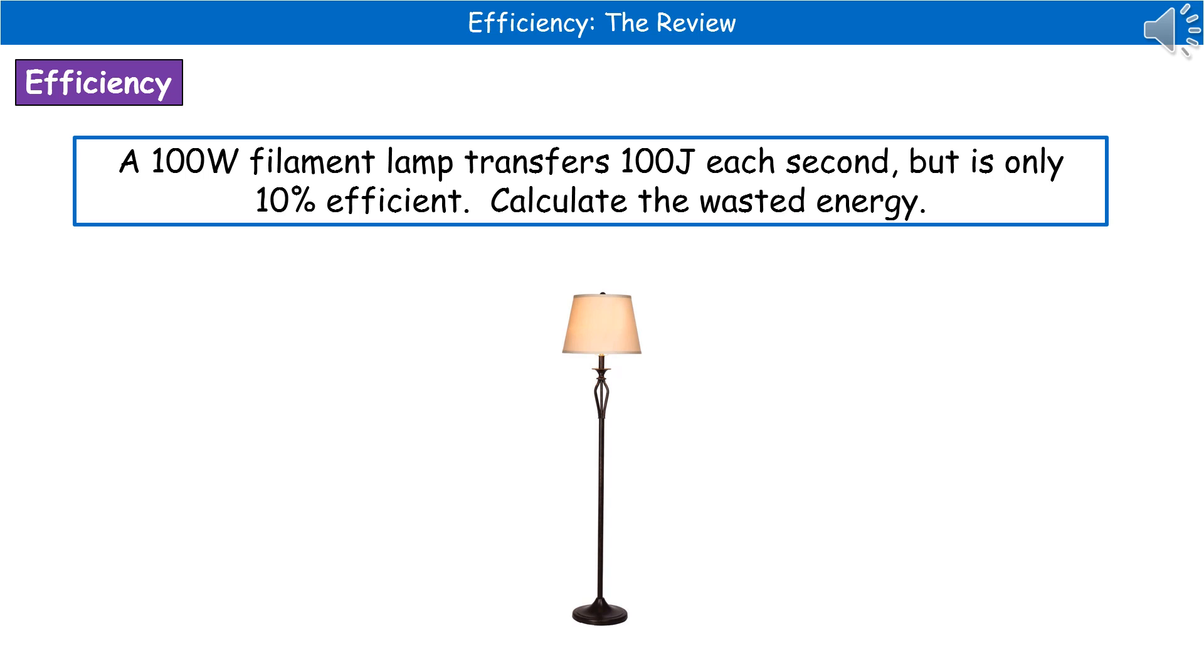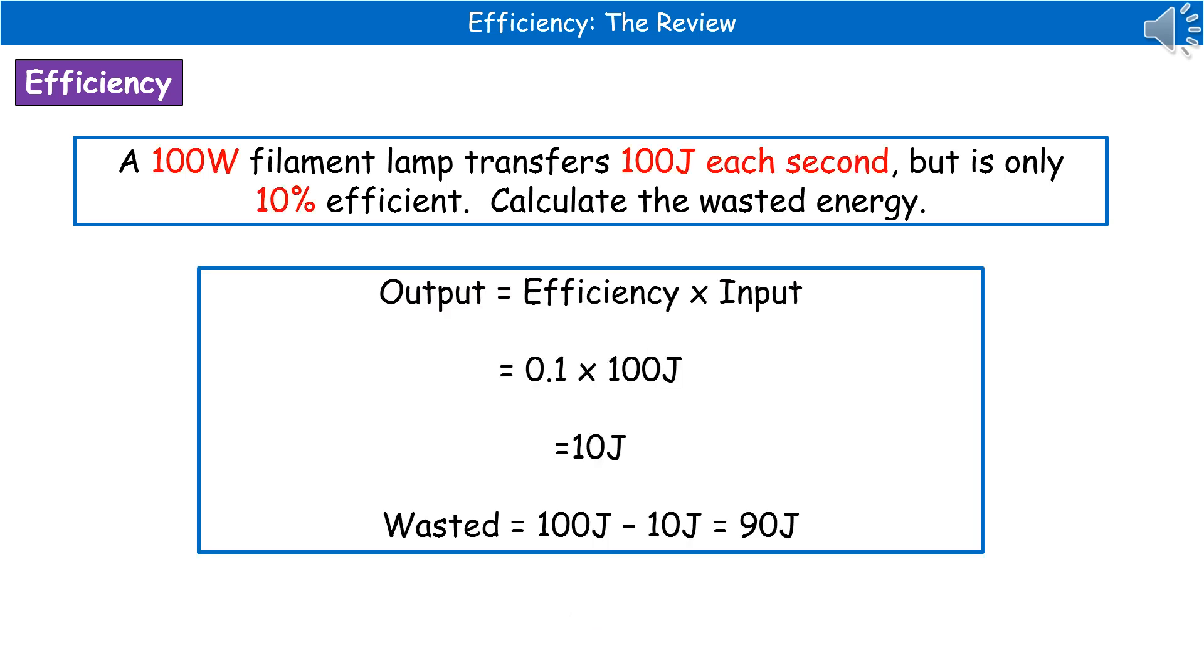Another example of a question we could be asked is here. A 100-watt filament lamp transfers 100 joules each second but is only 10% efficient. Calculate the wasted energy. Because this is a calculation question, the first thing we do is highlight, circle, underline, or jot down the key bits of information, which I've done in red for you.